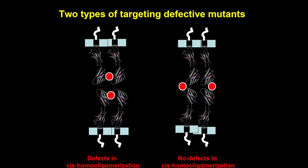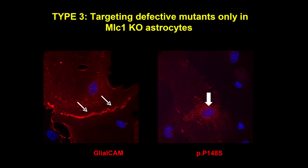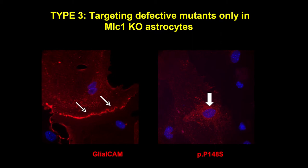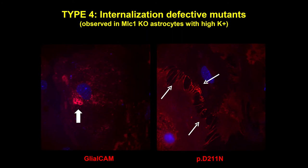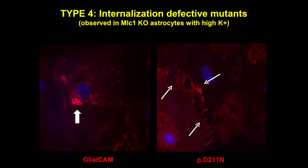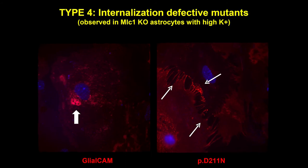We have also identified a mutation that is mislocalized in astrocytes from the MLC1 knockout mouse, suggesting that both proteins rely on each other to be stable. Finally, we have found some mutations that act as gain-of-function mutants, showing effective internalization in MLC1 knockout astrocytes treated with high potassium conditions.